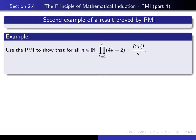So here's the result we're going to prove. We're going to show that for every natural number n, if we multiply the first n terms of the form 4k minus 2 together, then that's the same as 2n factorial divided by n factorial.